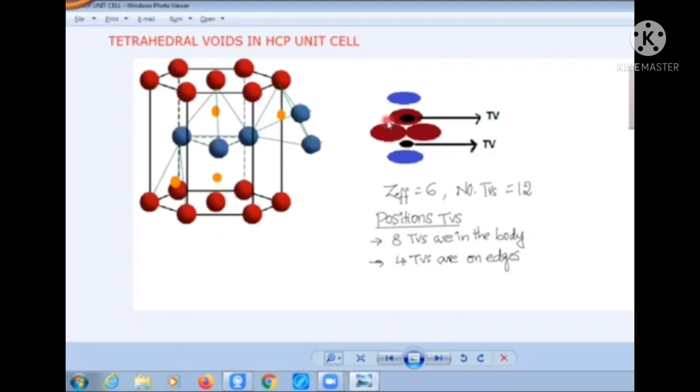Here I have already drawn the position of tetrahedral voids. It's actually formed between four atoms of this arrangement. So if four atoms are like this, this position is tetrahedral voids and also one more tetrahedral void is observed here.